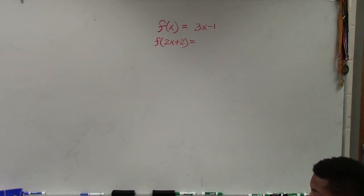My input value is a little bit different. So now our function is 3x minus 1. It's not an absolute value, it's a linear function.